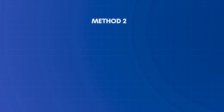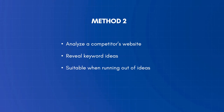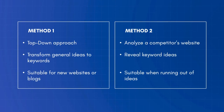The second method is to use a competitor's website as the starting point of your research. With the help of tools, you can reveal lucrative keywords for your business. This method is handy when running out of ideas or not sure what keywords to target. I use both methods when doing keyword research for my website, and in this video I will show you how each method works.